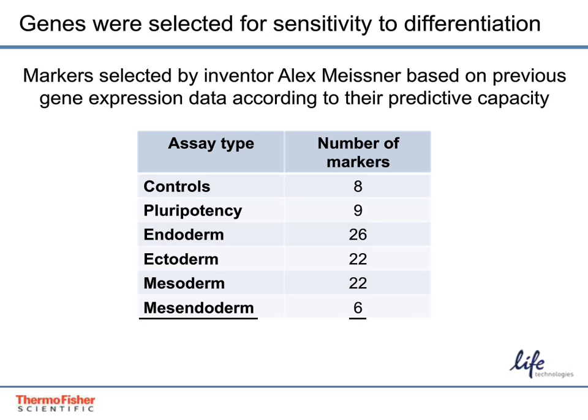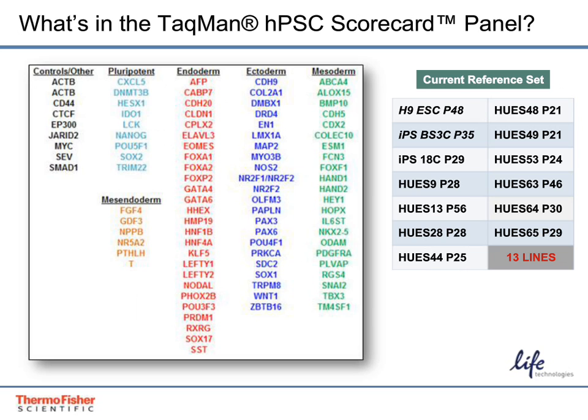The genes in the HPSC scorecard panel are shown on this slide. The updated data reference set of 11 ES and two iPS lines is also shown here. Note that the reference lines were grown on feeders in KSR-based culture medium. We will review results from lines grown in several different culture systems later in the presentation.